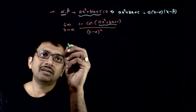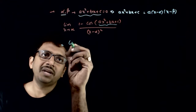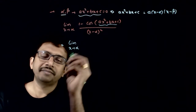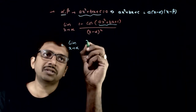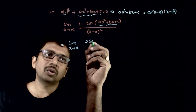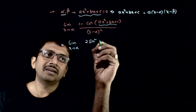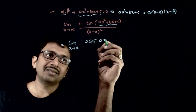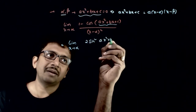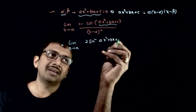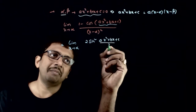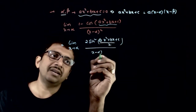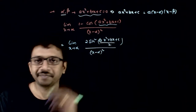So this limit can be written as limit x tends to alpha. We use the identity 1 minus cos θ = 2 sin²(θ/2), giving us 2 sin² of (ax² + bx + c) / 2, divided by (x minus alpha) whole square.